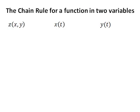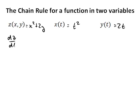Let's have a look at the chain rule for a function in two variables. Let's say we have a function z in x and y, a function x in t, and another function y also in t. For example, we could have z of x and y as x squared plus 2y, x of t as t squared, and y of t as 2t. Now, if we are supposed to find dz/dt, how do we do this? This is where the chain rule comes in.